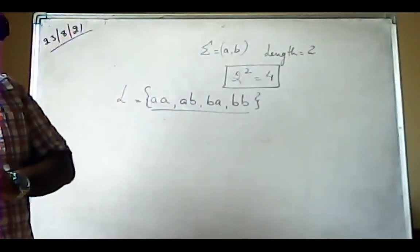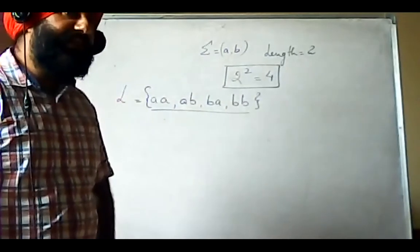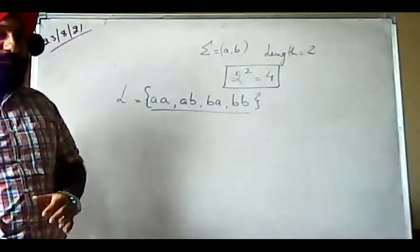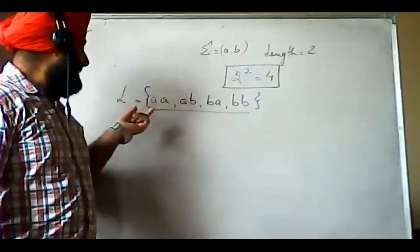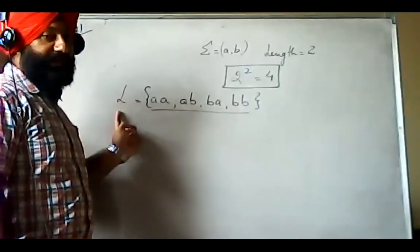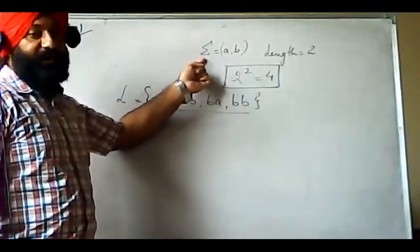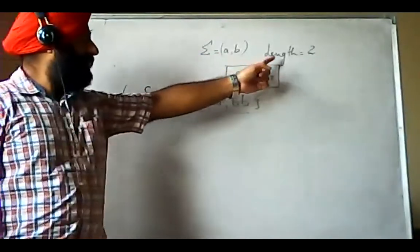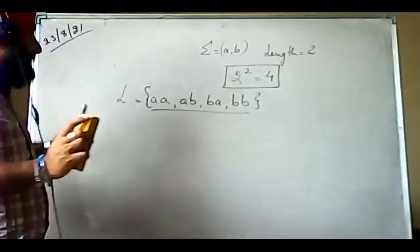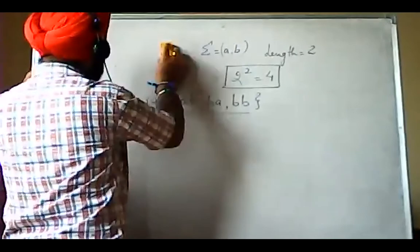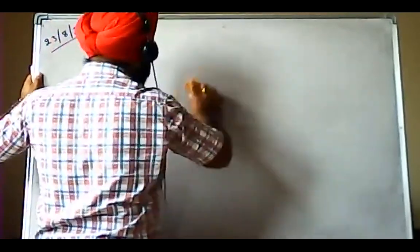First, we need to determine how many states will be used. Then we construct language L with sigma equal to {a, b} of length equal to two. After that, let's proceed with the construction of the DFA.